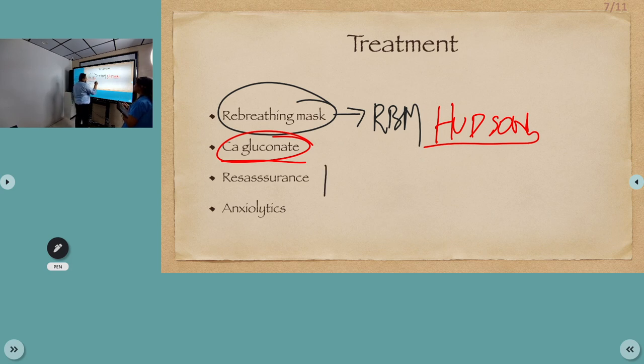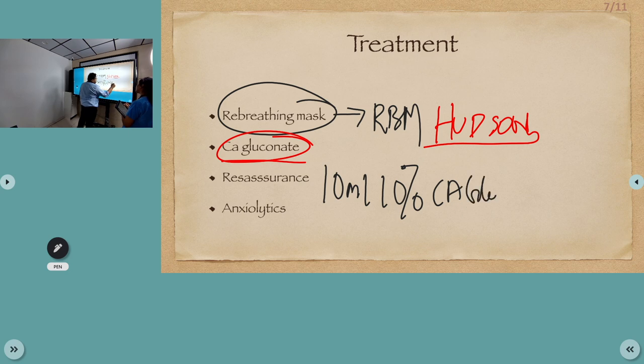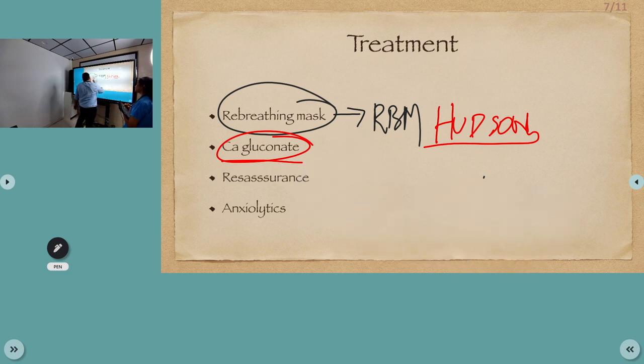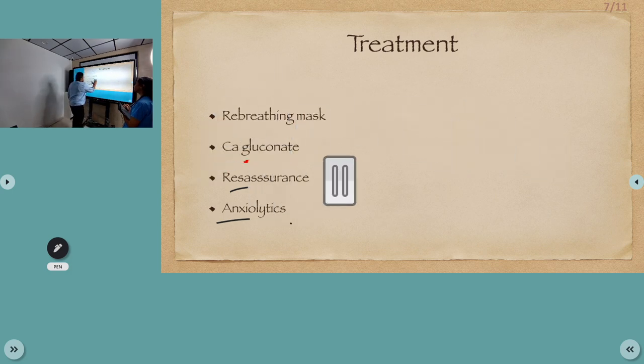The patient was still having spasms which were painful to him even after using rebreathing mask, so we decided to administer calcium gluconate. What is the dose? 10 ml of 10% calcium gluconate over 10 minutes. That is important - gluconate, because we have calcium chloride also available, but that you cannot administer in a peripheral line. You need a central line for that. Continuous cardiac monitoring while we administer calcium gluconate. Then reassurance and anxiolytics. He is already on anxiolytic, so he needs counseling. Maybe he might have skipped his doses.